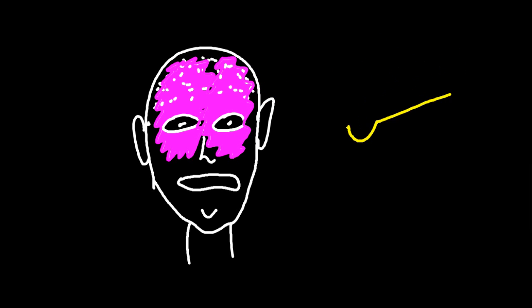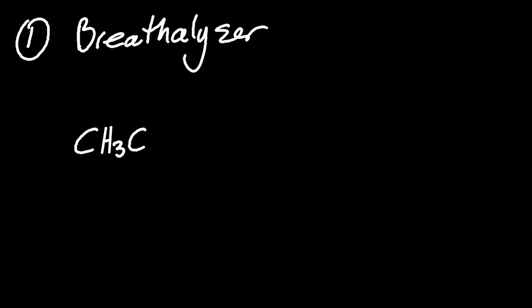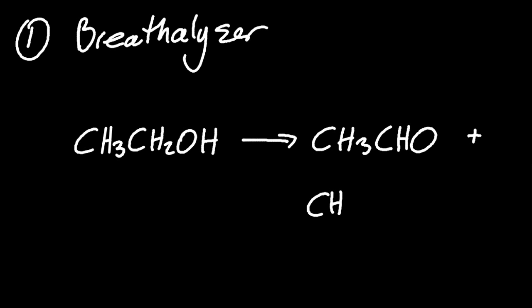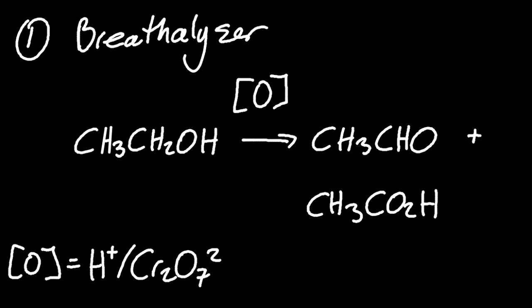So there are five ways the IB wants you to know. The first way is with the breathalyzer, which is what I just demonstrated. The chemical equation is ethanol goes to ethanal and maybe some ethanoic acid as well. Now, don't forget the square brackets with the O to show oxidizing agent, which was acidified dichromate, if you remember correctly.